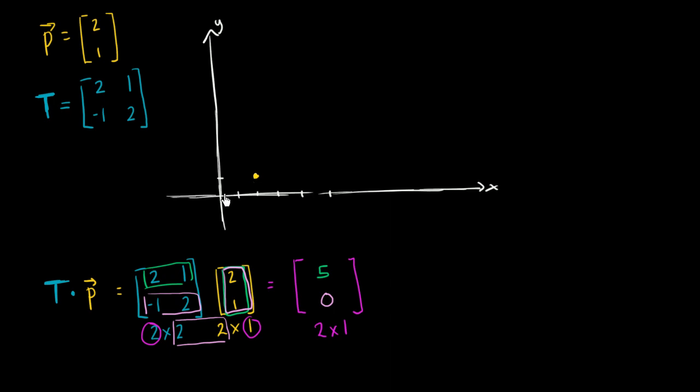So we started with this point, this position vector, I guess you could say P, and it's transformed it to this other position vector, and I guess we could call this, why don't we call this P, P prime? So that if you wanted to draw them as vectors, this right over, or kind of in traditional vector form, that right over there is P prime, and this right over here is P, this right over here is P, this is P, actually, let me make sure there's a prime, and this is P prime, and the way we got from P to P prime is using this transformation matrix.